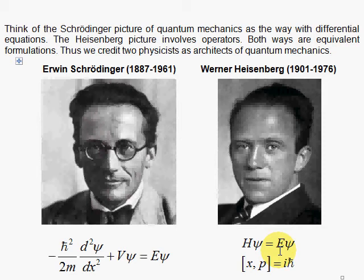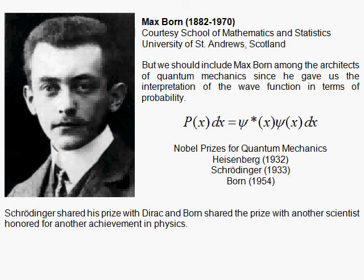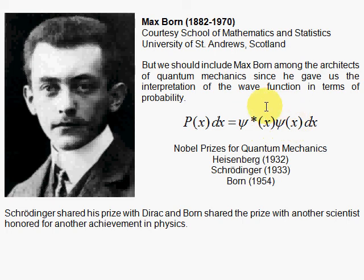We should include one more scientist in the architects of quantum mechanics, and that is Max Born. Max Born gave us the interpretation of the wave function: psi-star times psi, the complex conjugate times the wave function, gives you a probability density. When you multiply by dx, you get that little strip — the probability that the particle is in the range from x to x plus dx. All three won Nobel Prizes: Heisenberg in 1932, Schrödinger in 1933 sharing with Dirac, and Born in 1954 sharing with another scientist.